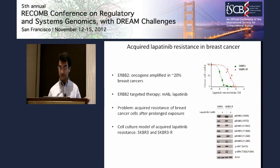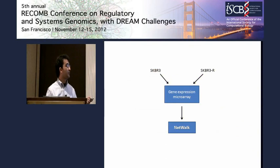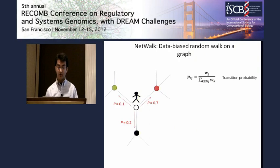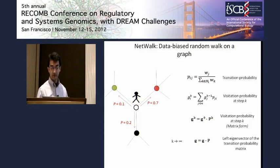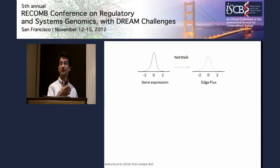To find what network processes are involved in acquired resistance to lapatinib, we performed microarray gene expression analysis from both SKBR-3 and SKBR-3R cells before and after lapatinib treatment, and we analyzed them using our own network algorithm. NetWalk is a data-biased random walk, where transition probabilities are biased towards data.